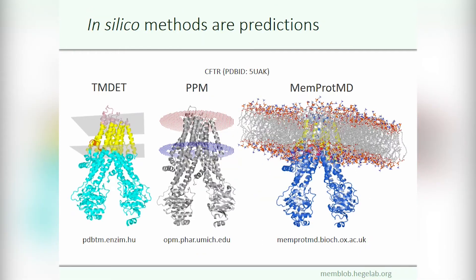The lack of sufficient experimental data on membrane embedment led to the development of in silico membrane prediction methods. Here are the visual outputs of the most popular ones. TMDant and PPM define the membrane as a slab with two parallel planes, while MemProtMD builds a bilayer around the protein using molecular dynamics simulations. However, the experimental data used as reference during their development was low resolution.